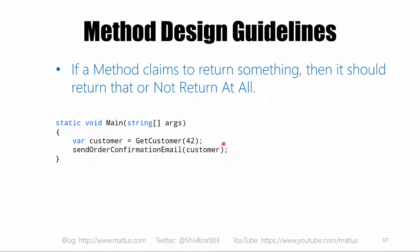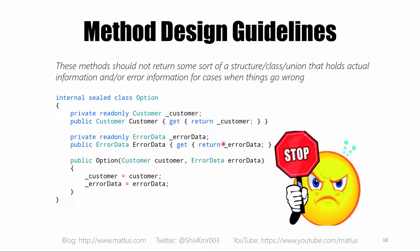Some clever people will come up with a class that has a property called Customer and another property giving some error information back, saying 'my method claims to be returning an option.' That's not what I'm saying — don't try to beat the system. If a method claims to return a customer, don't return an option or some sort of union type. There are different names for this design pattern — just don't do it.